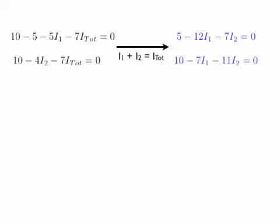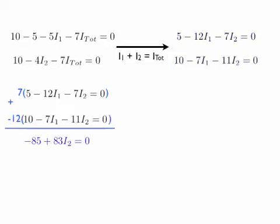I get two equations with two unknowns. I want to combine these in a way that gets rid of one of the unknowns. In this case, I'm going to do 7 times the first equation and add that to negative 12 times the second equation — that should cancel out I1 for me. When I do that, I get negative 85 plus 83 I2 equals 0. I can solve that for I2 and I get 1.024 amps. This is a positive number, so the direction I guessed for I2 seems to be correct.